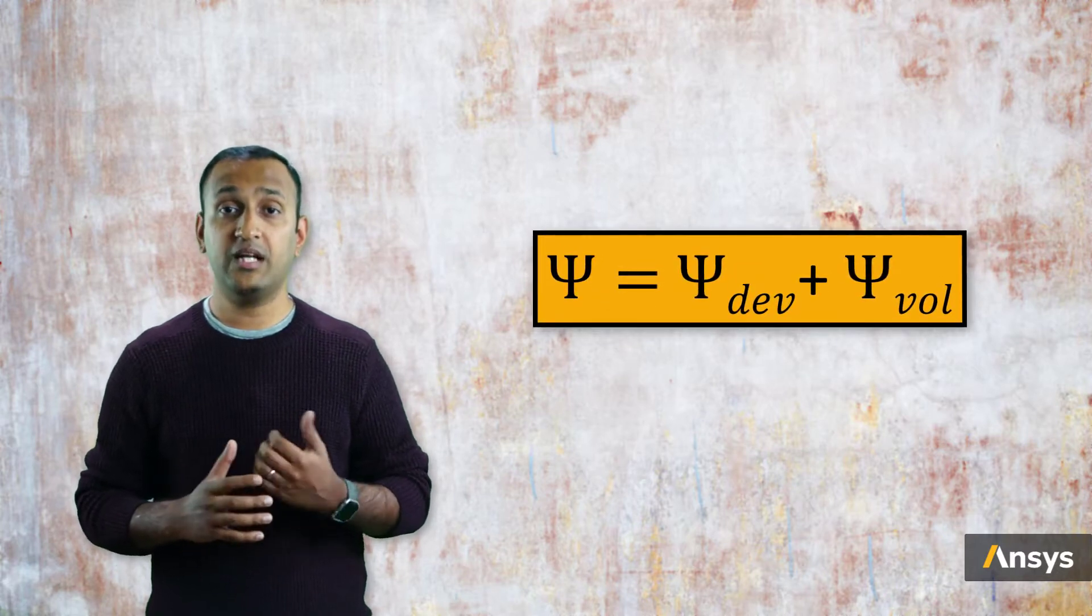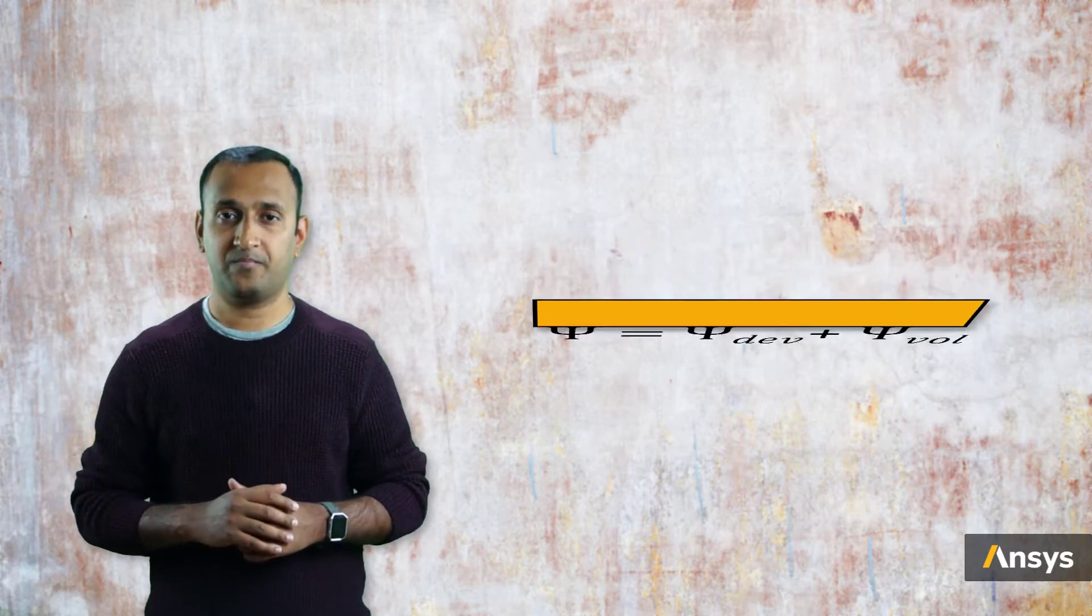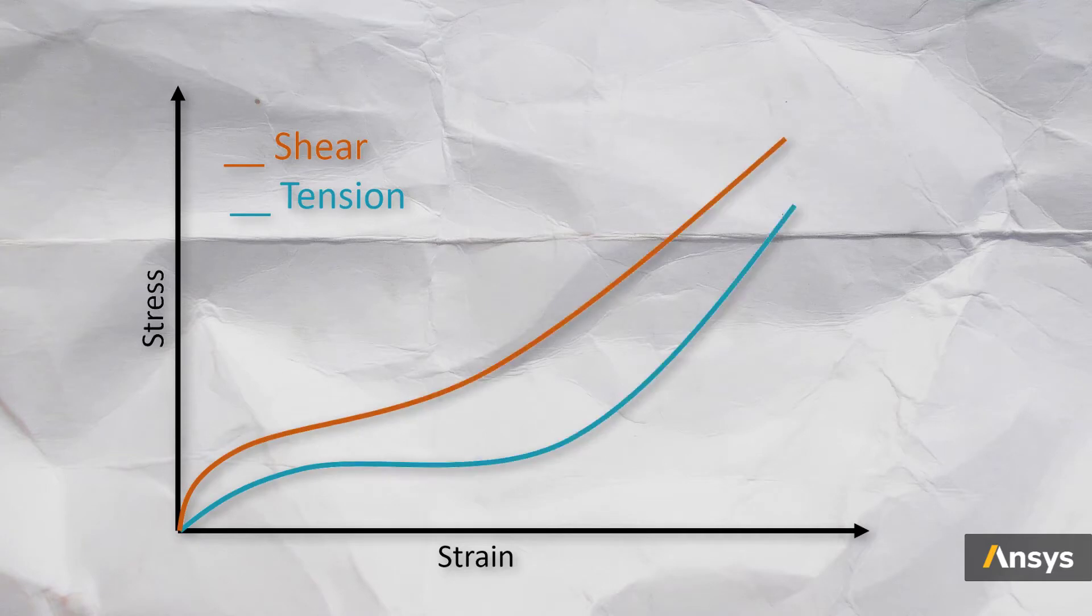The strain energy function is often expressed as an additive split of the deviatoric and the volumetric strain energies. It's important to note that the stress developed in the body depends on the type of strain that is present in it. For instance, the stress developed in the part at a tensile strain of 20% is different from the stress developed in the same body at a shear strain of 20%. So it's important to note the mode of deformation that the body is experiencing.